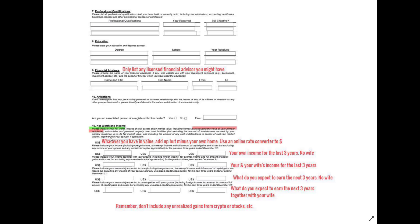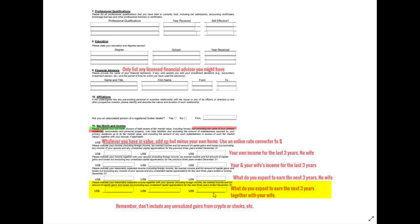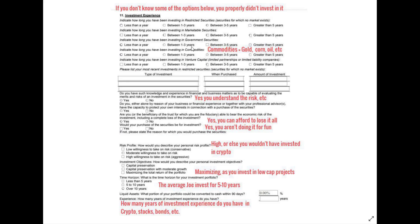For net worth and income: if you live outside the US where currency is not dollars, use an online converter to convert to dollars. You cannot include your primary home in this evaluation — add up everything else that has value, such as your car. The first income field is your own income for the last three years without your spouse's. The next is combined income with your spouse for the last three years. The third is expected income for the next three years without your spouse, and the fourth is expected combined income. Do not include unrealized gains from crypto or stocks.